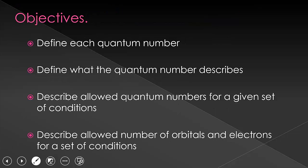So in this video, we have now defined quantum numbers and the rules for each quantum number. We've talked about how to decide if quantum numbers are allowed, and how to determine how many orbitals and how many electrons are allowed given the quantum numbers.